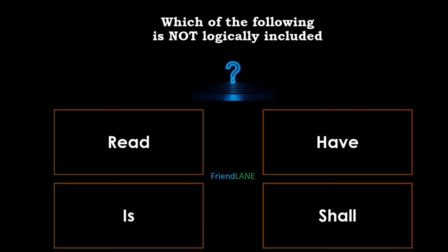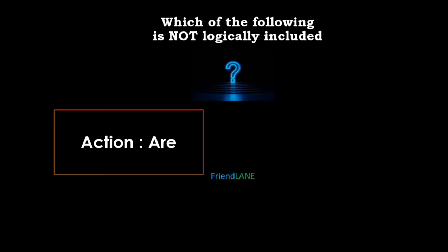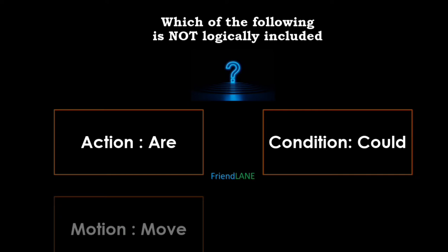Question 6: Which of the following is not logically included? Action: Arc. Condition: Good. Motion: Move. Situation: Shine.